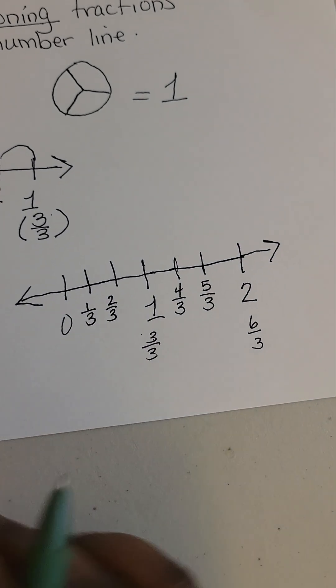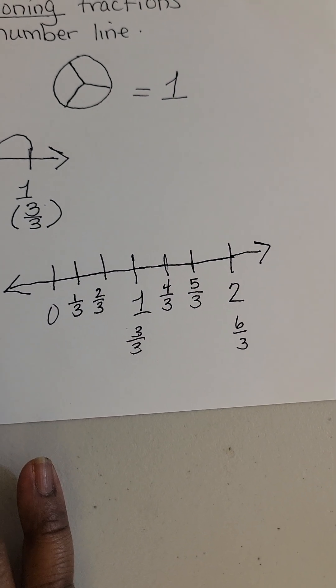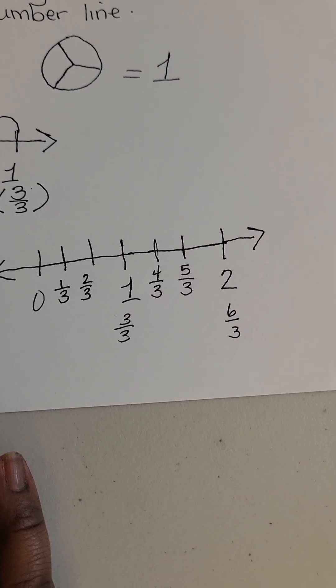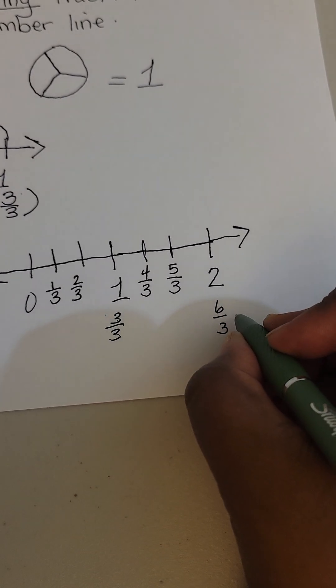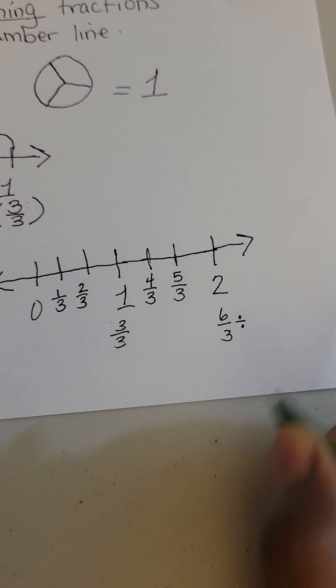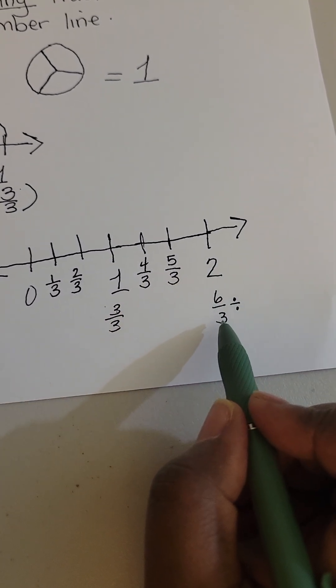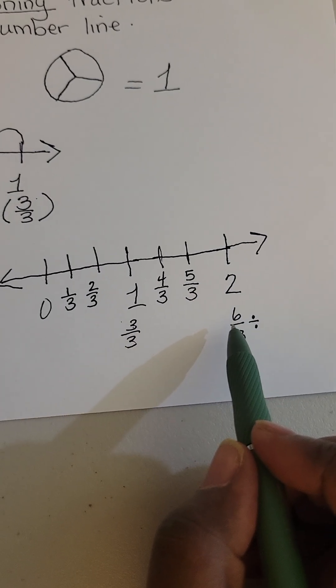Now how does that make sense? How do I know that that's right? Keeping the same denominator, I'm just going to keep counting up in order. But I'm going to divide to see if this is equivalent, if 6 over 3 is equivalent to 2.